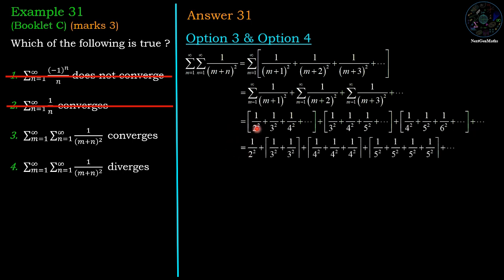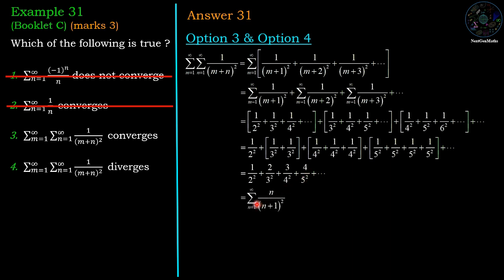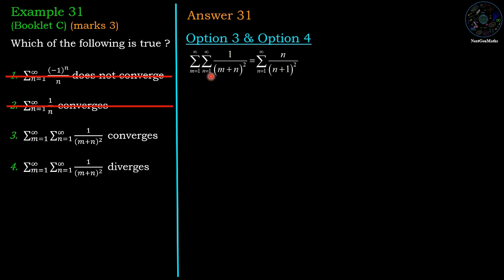Now, 1/2^2 appears only once across all terms; 1/3^2 appears 2 times; 1/4^2 appears 3 times; 1/5^2 appears 4 times, and so on. Rewriting, we have 1/2^2 + 2/3^2 + 3/4^2 + 4/5^2 + ..., which in series form is sigma n=1 to infinity of n/(n+1)^2. So the double summation converts to the single summation sigma n=1 to infinity of n/(n+1)^2.